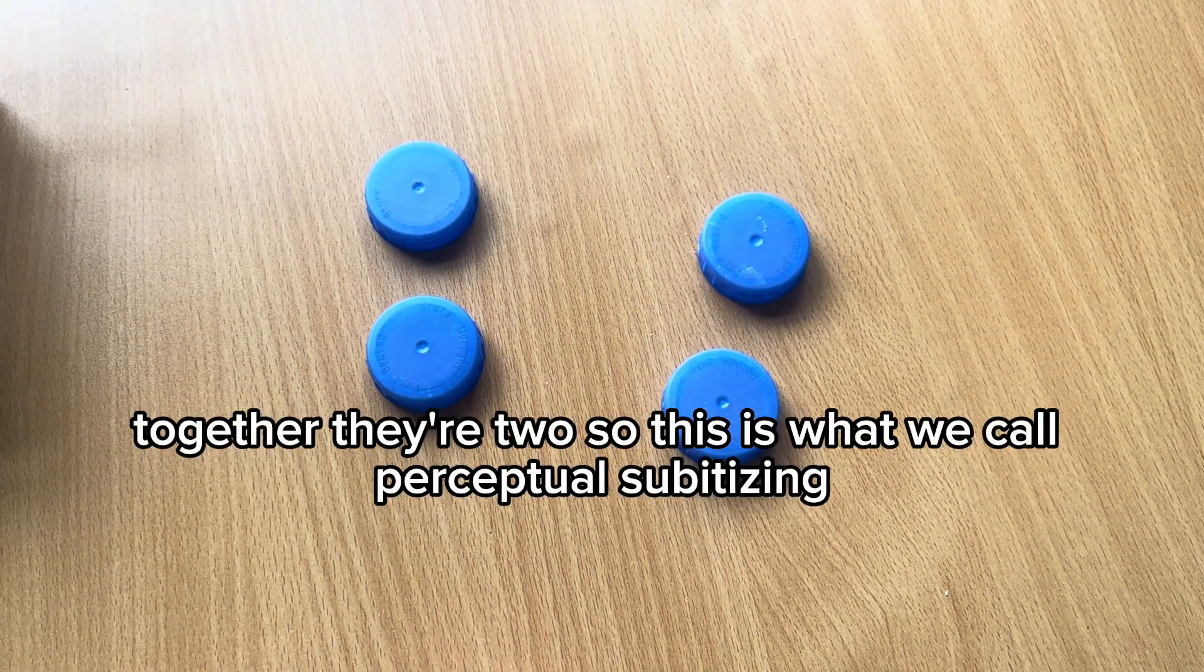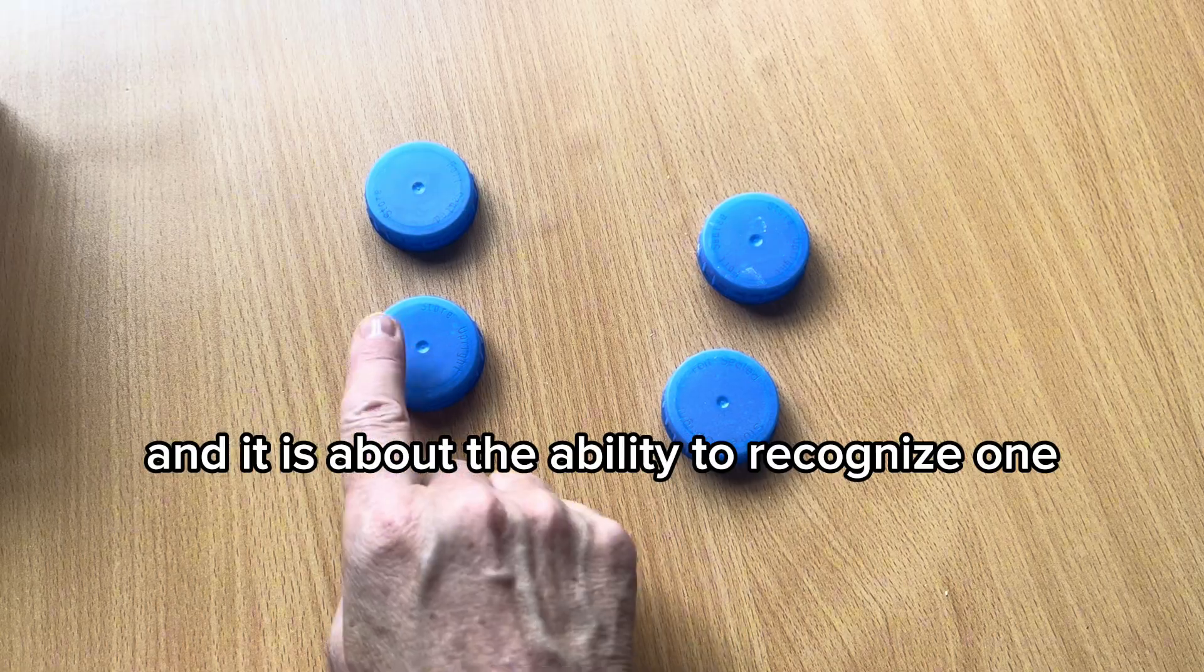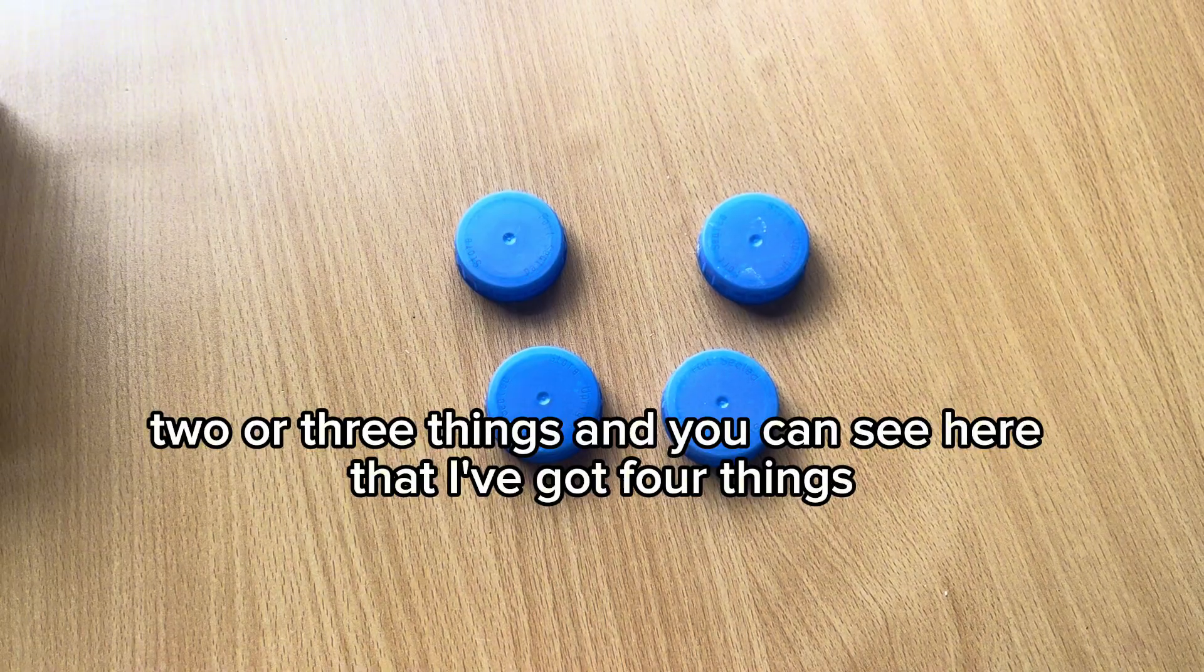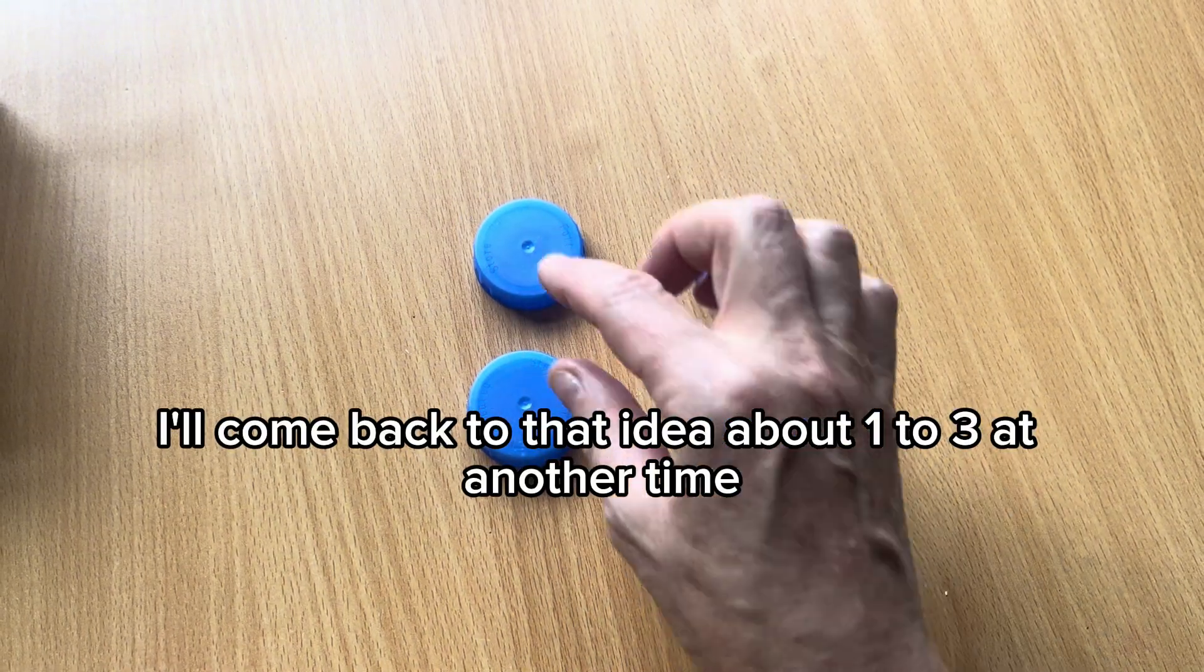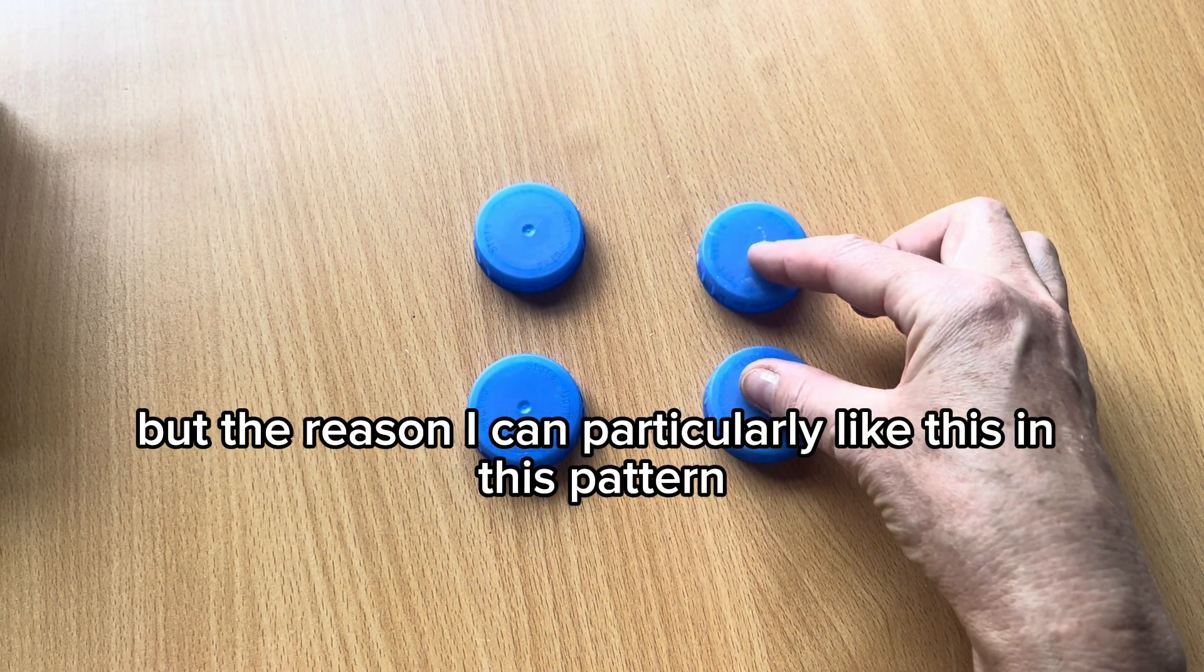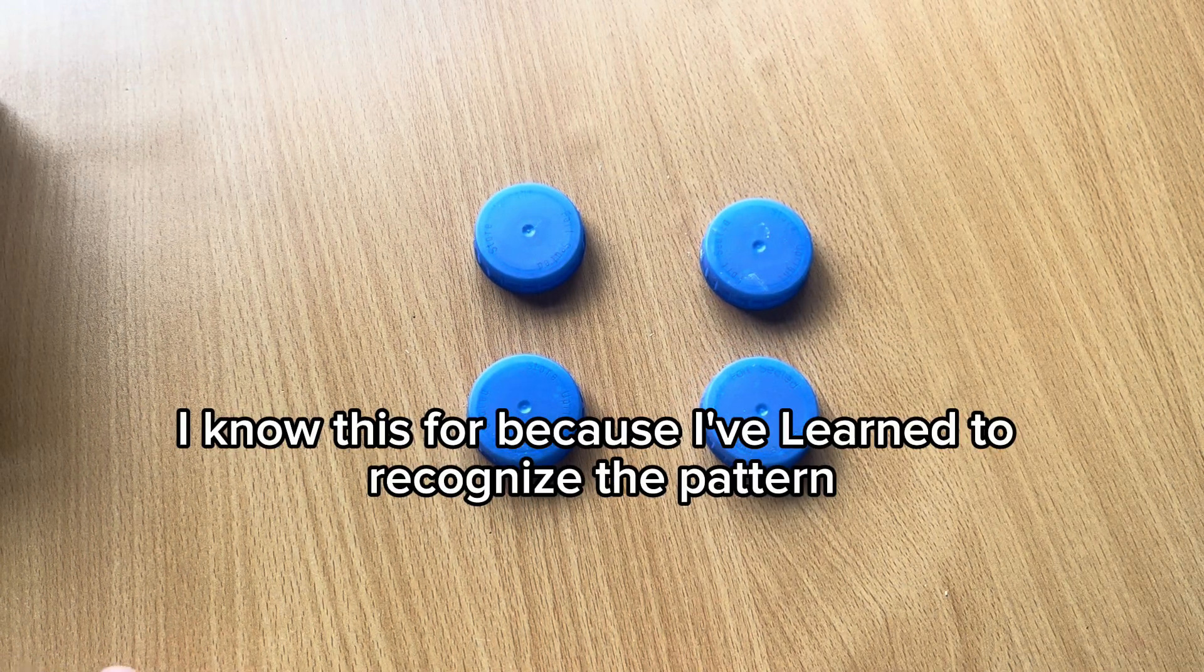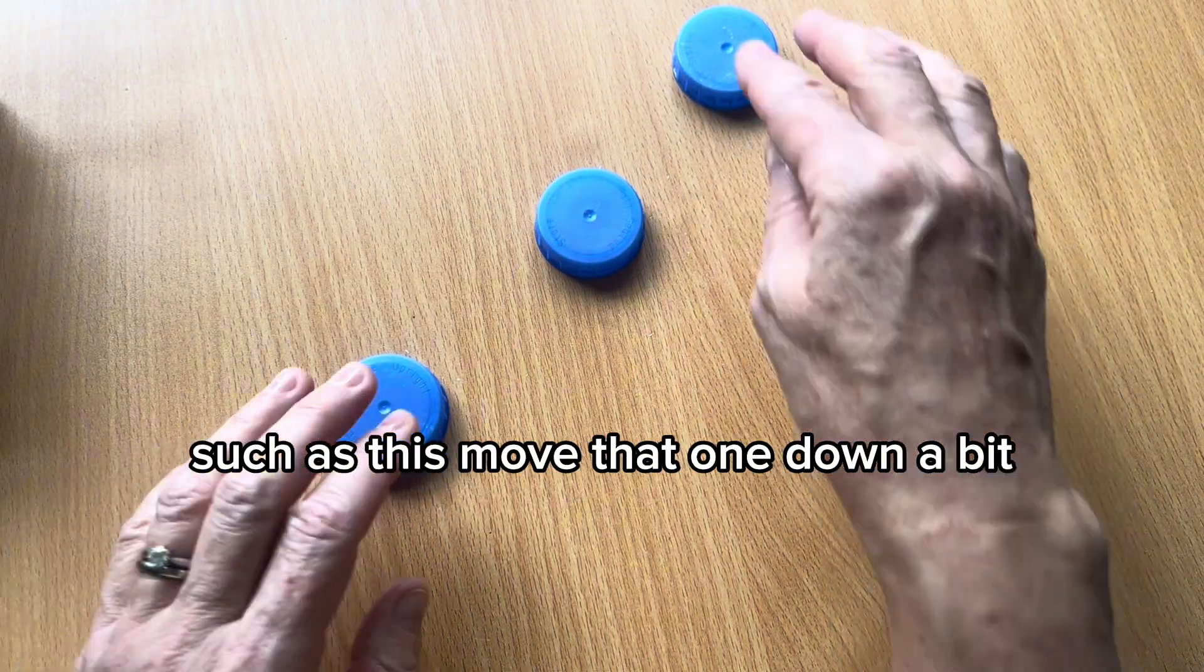So this is what we call perceptual subitising. And it is about the ability to recognise one, two or three things. And you can see here that I've got four things. I'll come back to that idea about one to three at another time. But the reason I can, particularly like this, in this pattern, I know there's four because I've learned to recognise the pattern. When things are more randomly arranged, such as this, move that one down a bit,